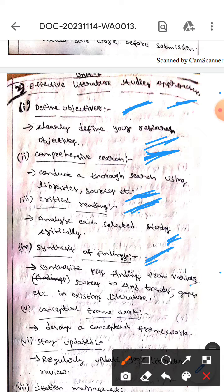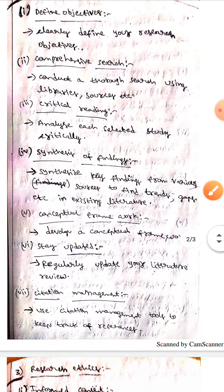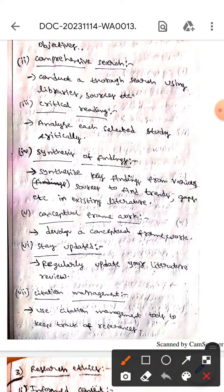We should synthesize key findings from various sources to find trends, gaps, and patterns in existing literature. I mean like present trends, gaps, and patterns of existing literature.